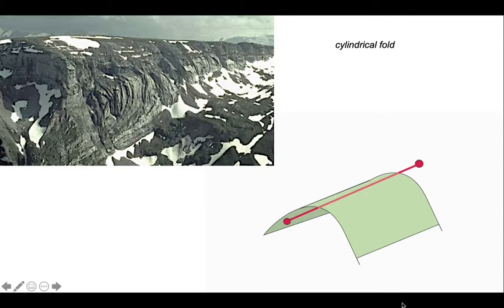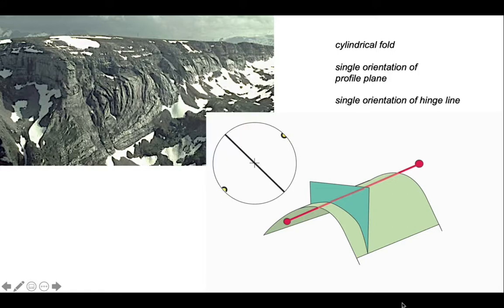Rather like in the sketch and in the photograph which comes from the Swiss Alps. For a cylindrical fold there's a single hinge line, therefore there's a single orientation of a profile plane. If we plot this in a stereo net, we have a single profile plane running like this and the hinge as we can see like this. In this particular example the profile plane is vertical, so the hinge line is horizontal, plotting on either side of the stereo net.